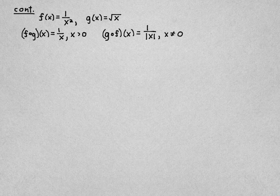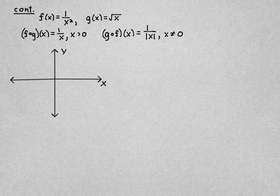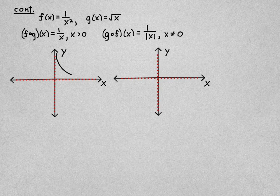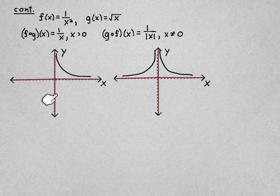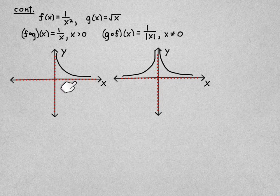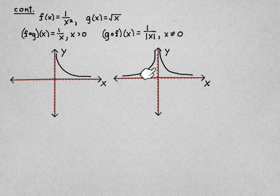I wanted to show you the graphs so you can see what's going on. These dotted red lines here are asymptotes. So these both have asymptotes.